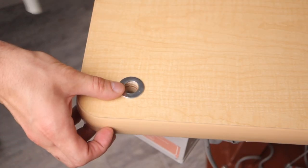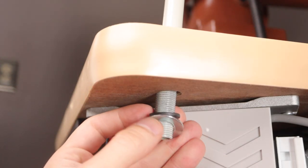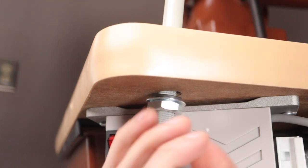For the thread stand, use a washer on top and insert the stand into the hole, then use the small black washer followed by the large washer before tightening everything down with the nut.